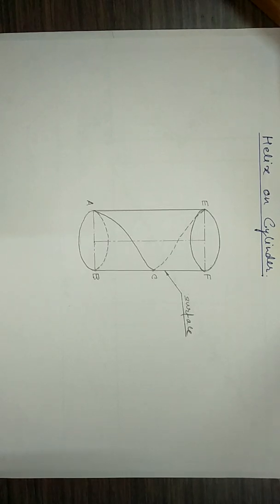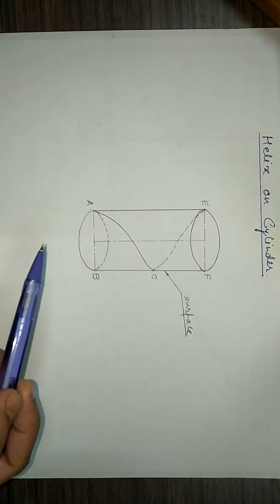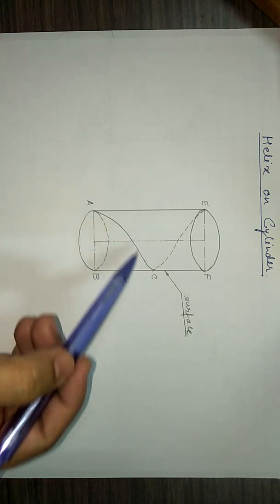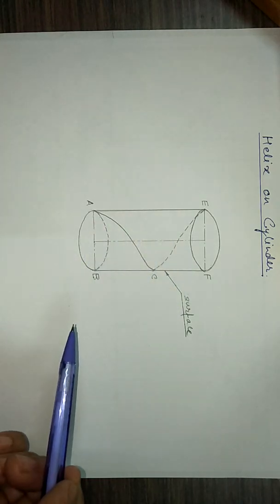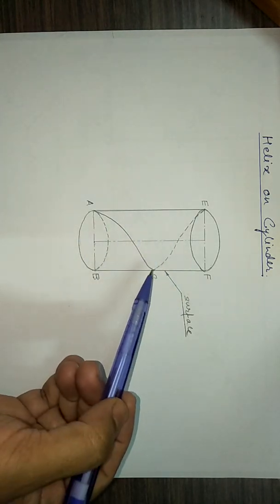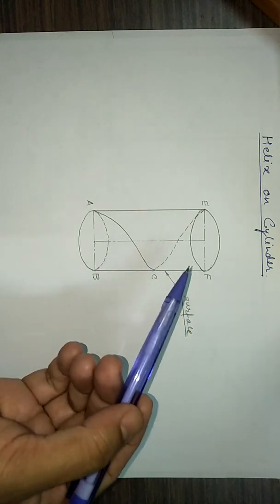Hello students, in the previous video we have seen how to draw a helix on a cylinder. Now, helix is the curve which is generated by a point which moves around the surface of a right circular cylinder and at the same time advances in the axial direction.